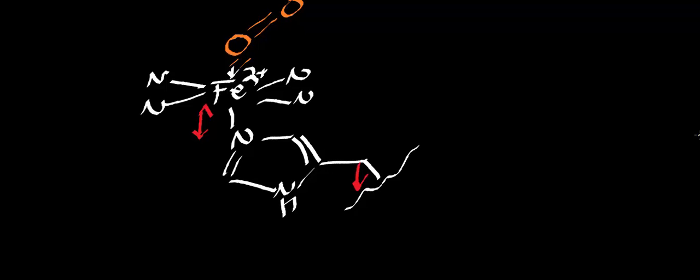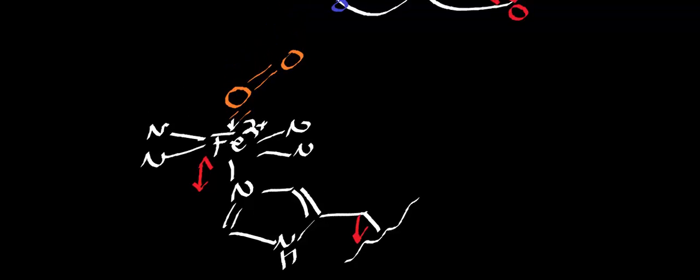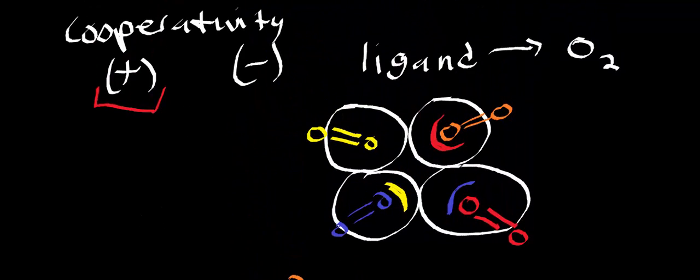When oxygen binds to the iron, the histidine moves just a little bit — fractions of an angstrom — but enough to change the conformation of the hemoglobin. We're assuming that when oxygen binds, we're in the R state — the relaxed state — so we're able to bind oxygen. This cooperativity is why it's important when we look at saturation curves.